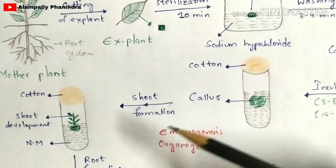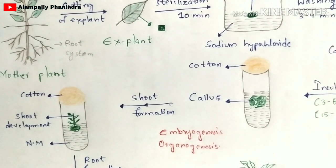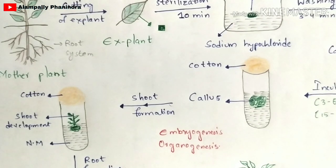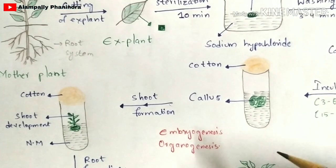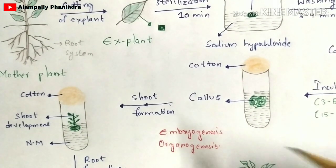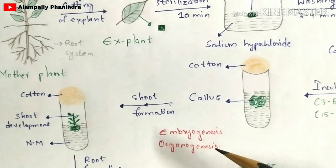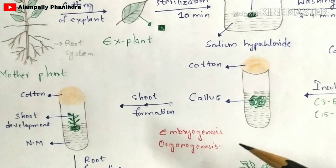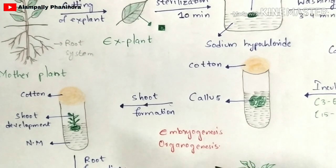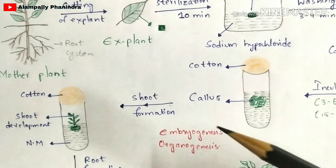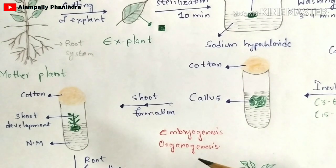I have drawn the formation in the case of organogenesis here. In the next video, I will explain embryogenesis in detail. Both embryogenesis and organogenesis are classified into two types: direct embryogenesis and indirect embryogenesis, and similarly direct organogenesis and indirect organogenesis. I will explain these in further videos in this series.